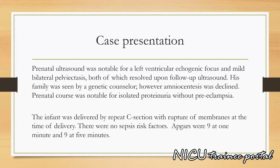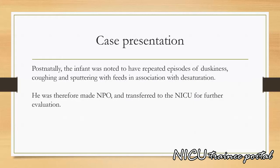The infant was delivered by repeat caesarean section with rupture of membranes at the time of delivery. There were no sepsis risk factors. Apgars were 9 at 1 minute and 9 at 5 minutes. Postnatally, the infant was noted to have repeated episodes of duskiness, coughing and sputtering with feeds in association with desaturation. He was therefore made NPO and transferred to the NICU for further evaluation.